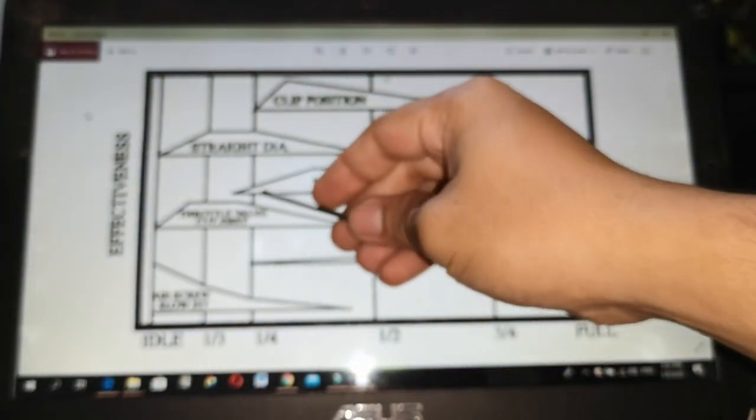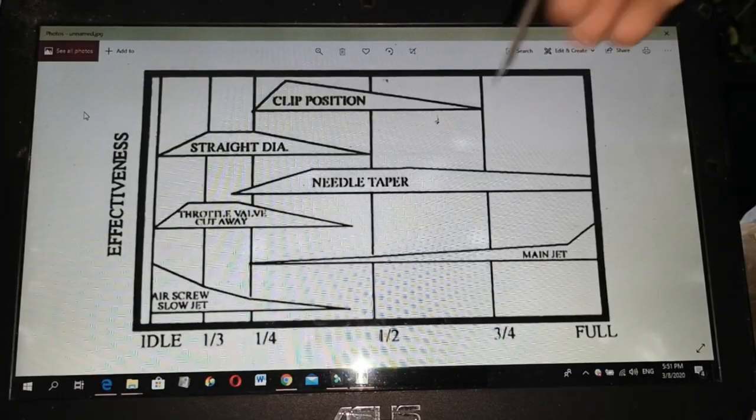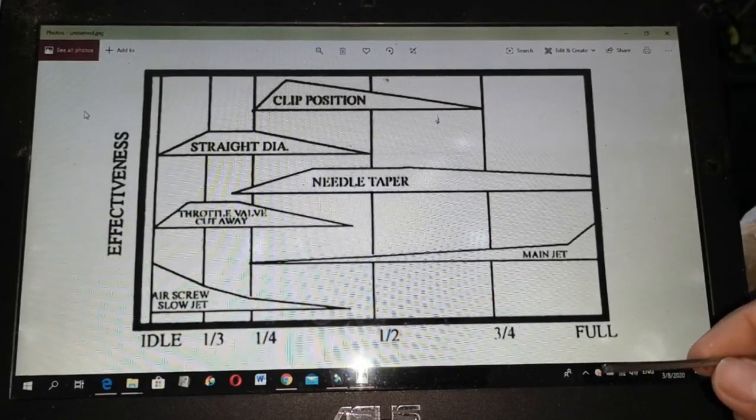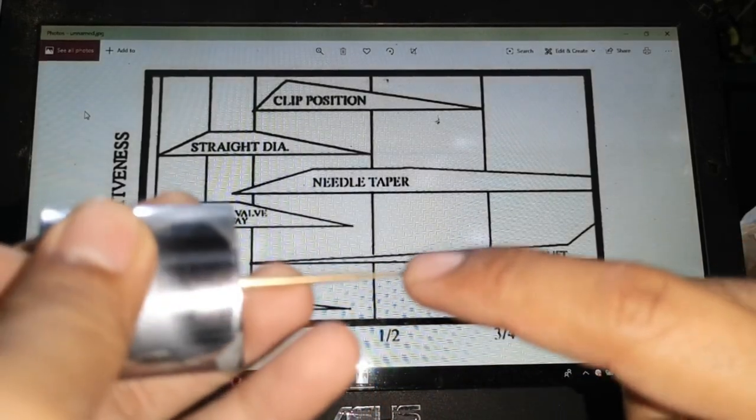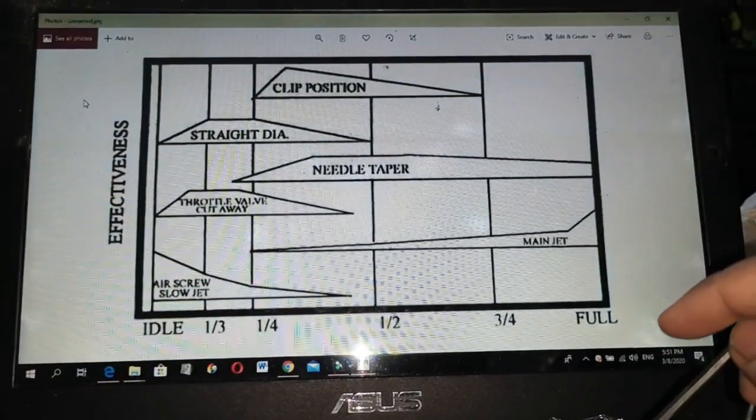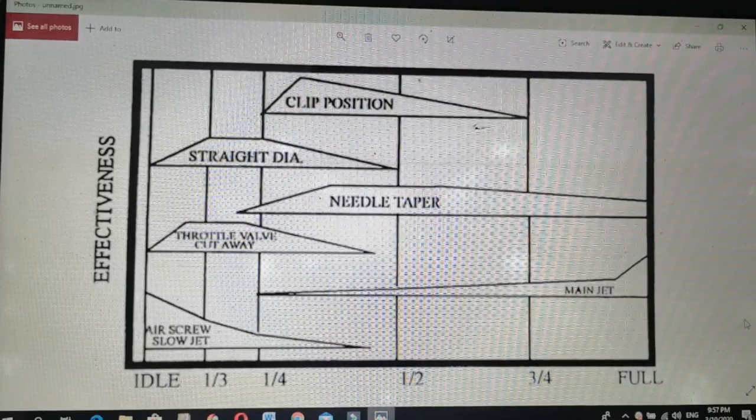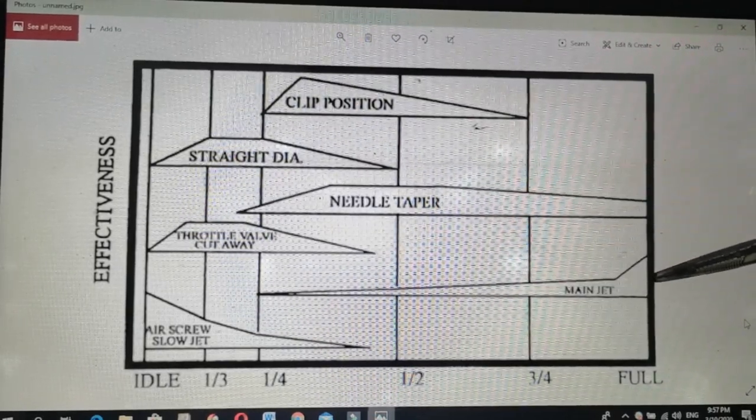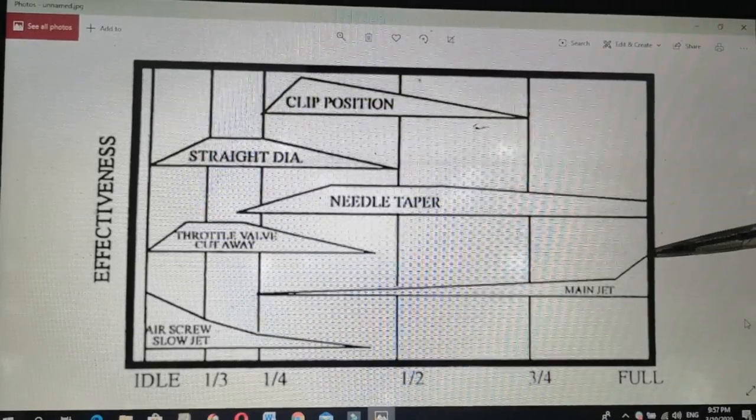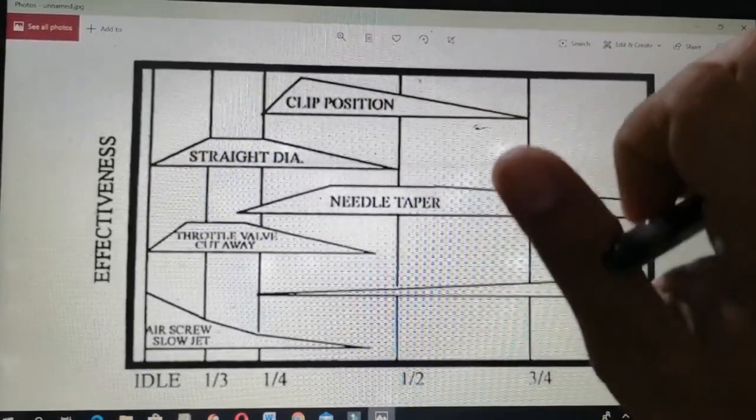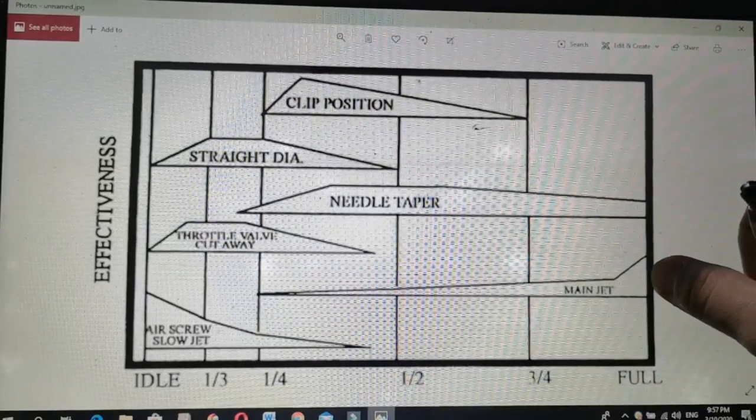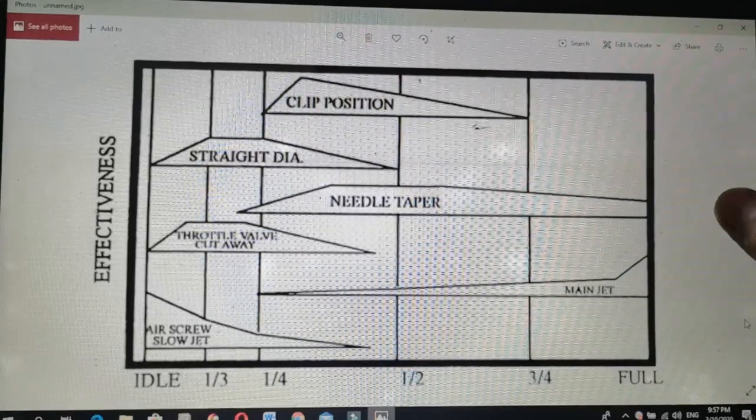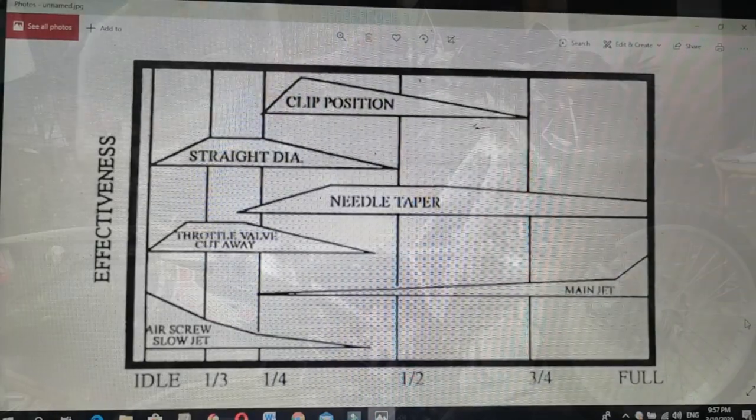So, ang efekto niya, from 1/4 papunta hanggang sa full throttle. Ayan. Yung ibang ginagawa nila, pinaputulan nila ang ito, para mas mag-rich ang mixture. Ang main jet naman, ay gumagana simula 3/4 throttle hanggang full throttle. So, pinakamataas na epekto niya is nasa full throttle or wide open throttle. Ayan. So, kapag may hesitation or palyado sa range na ito, ibig sabihin, main jet na ang kailangan palit.